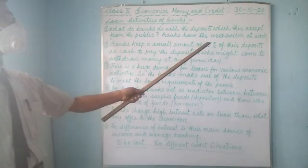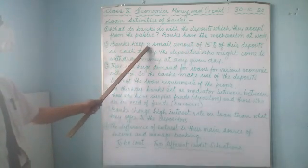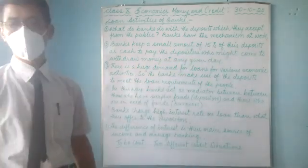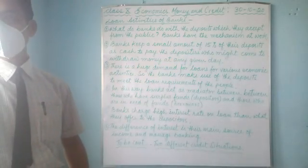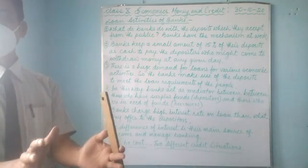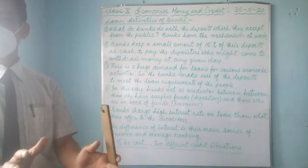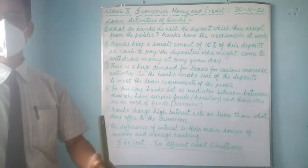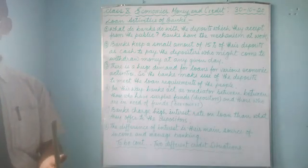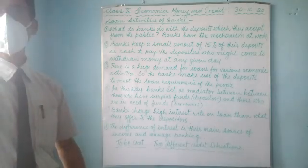Number two: banks keep a small amount — 15% — of their deposits for day-to-day needs. Of the money deposited by depositors, the bank keeps only 15% in the bank for day-to-day needs, and the remaining 85% they provide to other borrowers who come for loans.